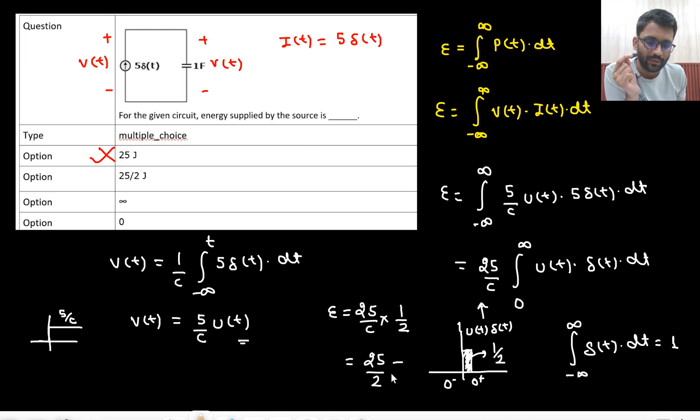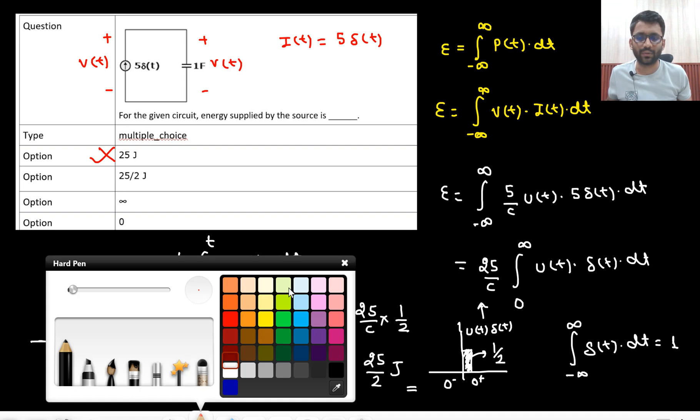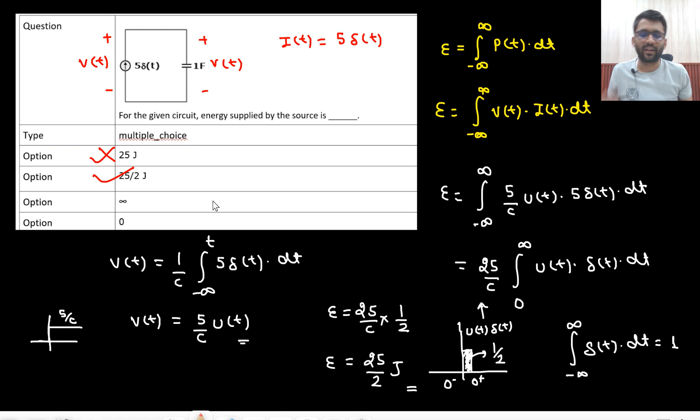So that was a blunder from my side. I am really sorry for that particular mistake. So answer would be 25 by 2 Joule. This was a very good question. But I did the mistake that I admit and thanks to our subscriber who notified this mistake. So I thought of making a video. That would be the correct answer 25 by 2 Joule. Okay then, thank you very much.